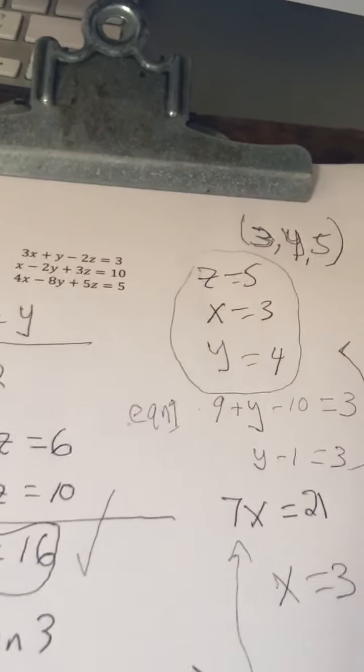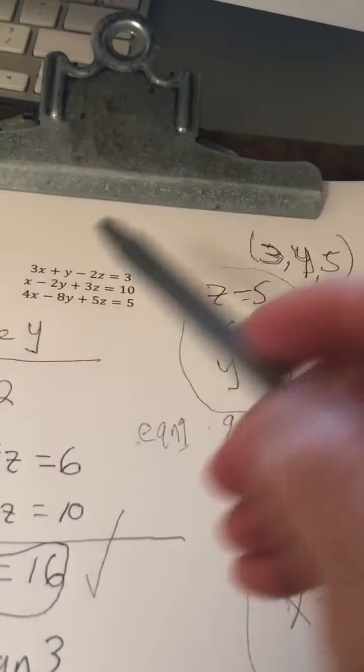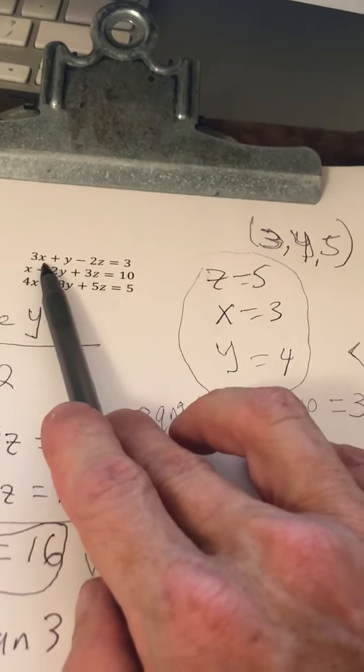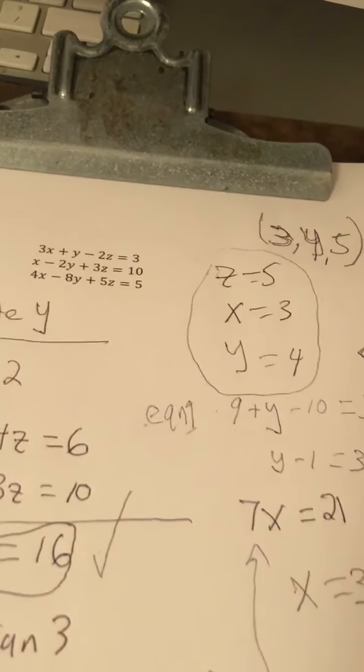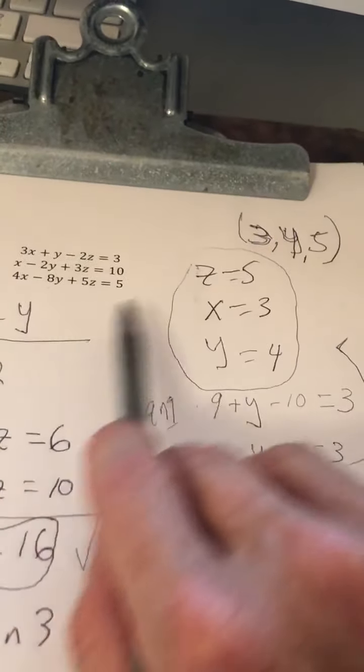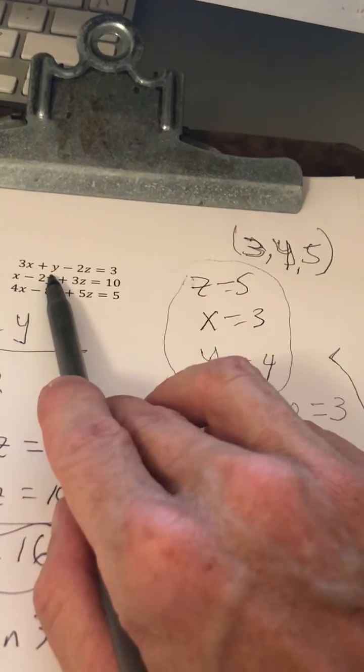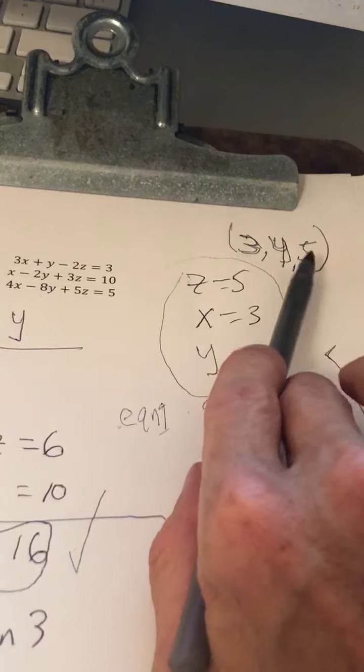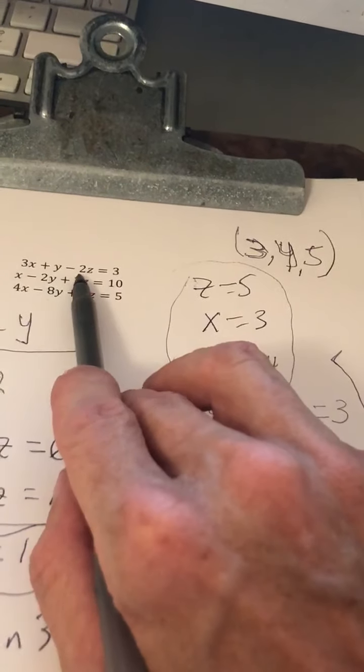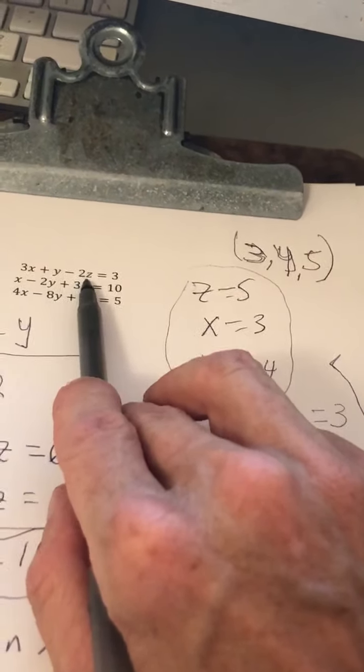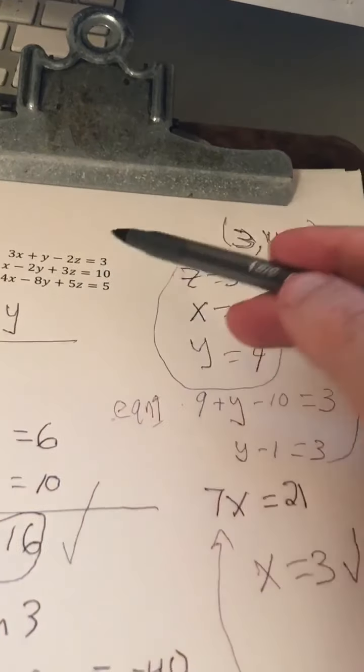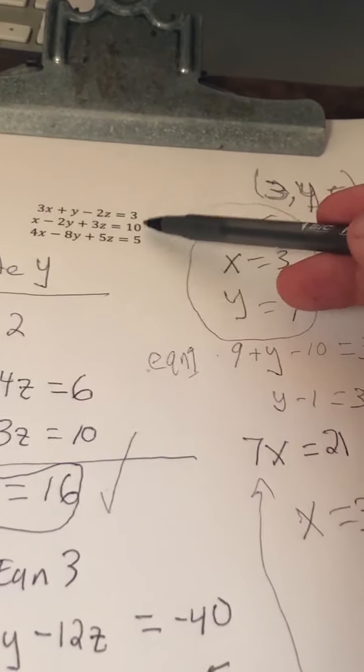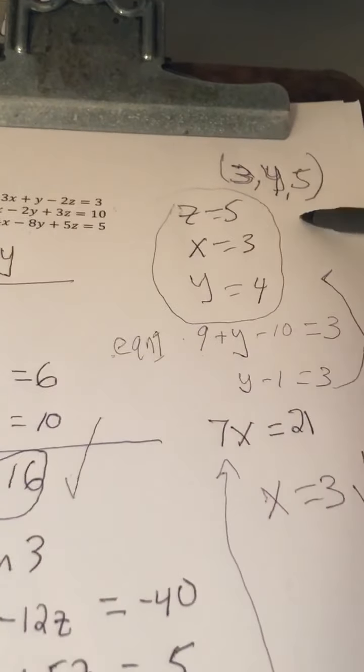Let's test at least one of these. So if x is 3, well, 3 times 3 is 9. If y is 4, we have 9 plus 4, which is 13. z is 5, 2 times 5 is 10, 13 minus 10 is 3. So the first equation works, and the second and third will also work. You can test them.